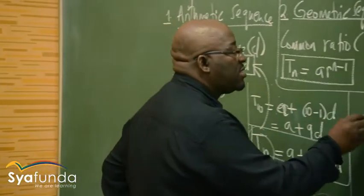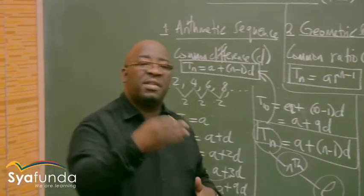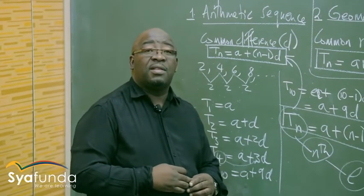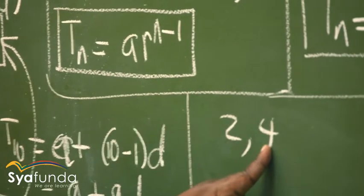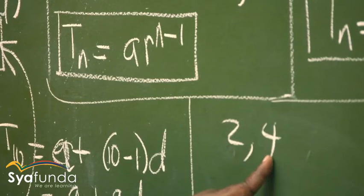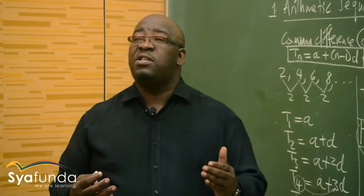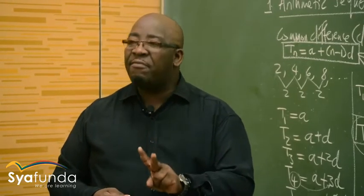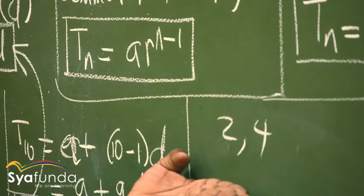If I've got a sequence like 2, 4 — what will be the next term, the third term? Others are saying 6, which is okay, and others are saying 8, which is also okay. But which one is correct? This can be 2 × 2 = 4, 4 × 2 = 8, or it can be 2 + 2 = 4, + 2 = 6. You cannot tell what type of sequence it would be with only two terms. You must have a minimum of three terms to tell what type of sequence it is — it might be arithmetic or geometric.